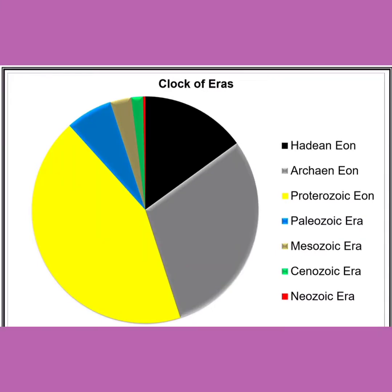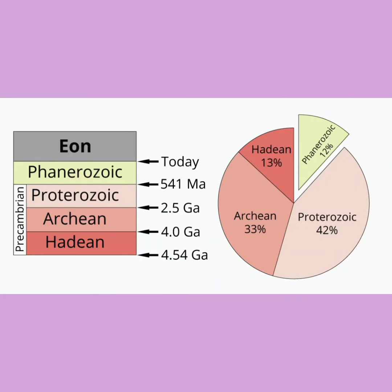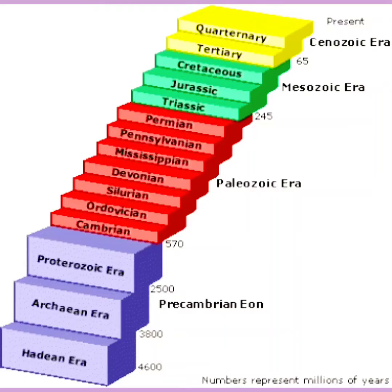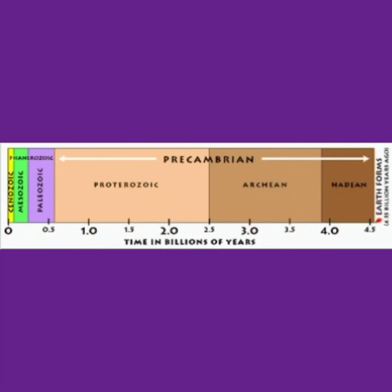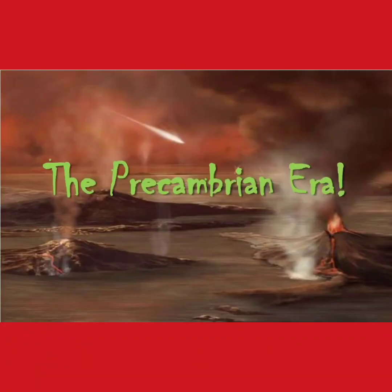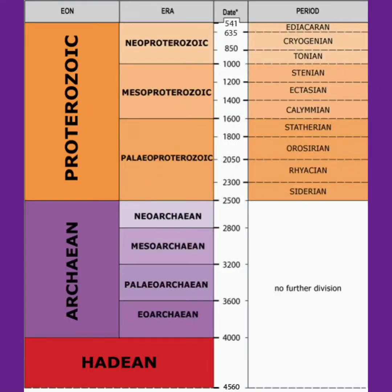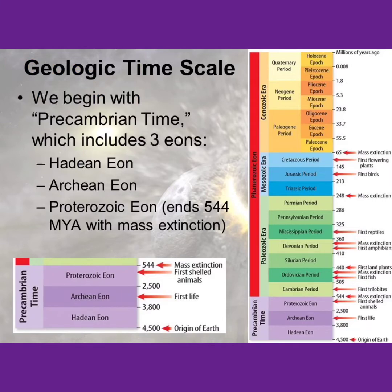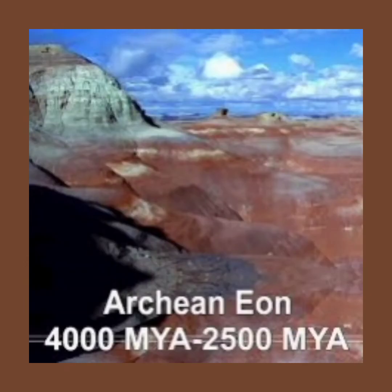The Eon is the broadest category of geological time. Earth's history is characterized by four Eons and in order from oldest to youngest, they are the Hadean, the Archean, the Proterozoic, and the Phanerozoic. Collectively, the Hadean, Archean, and Proterozoic are informally referred to as the Precambrian. The Cambrian period refers to the beginning of the Phanerozoic Eon, so all rocks older than the Cambrian are Precambrian in age. These Precambrian Eons tell the story of Earth's beginning, life's origin, and the rise of complex life.